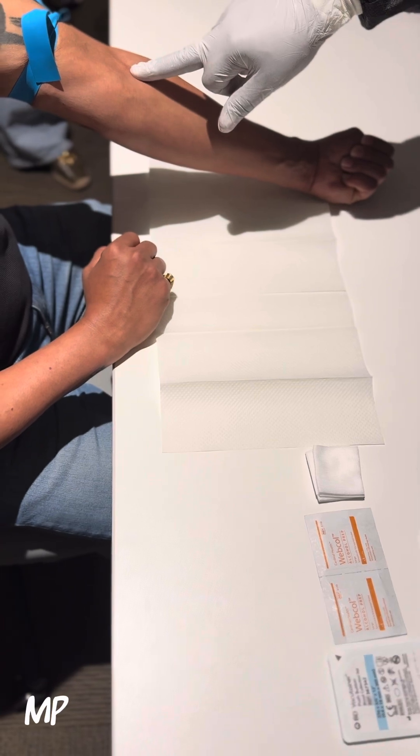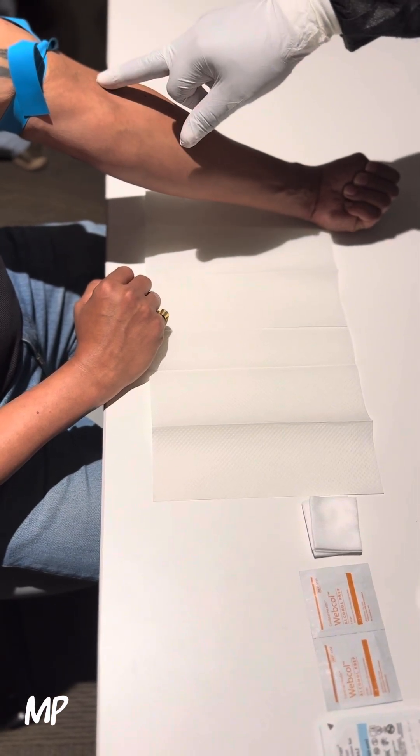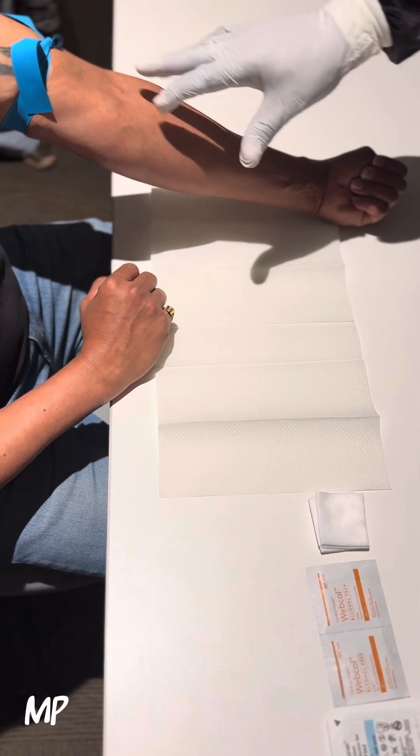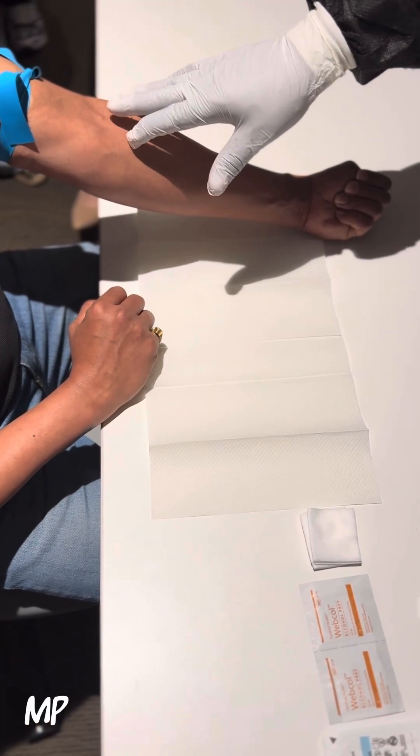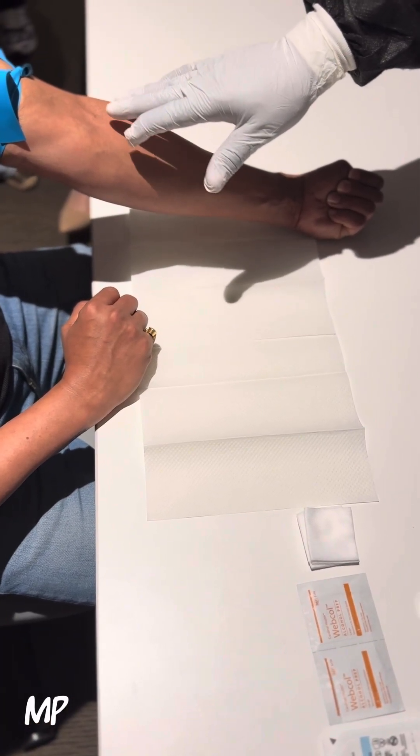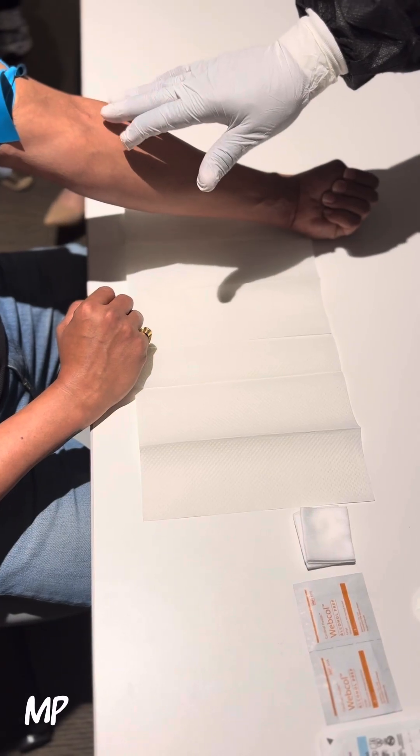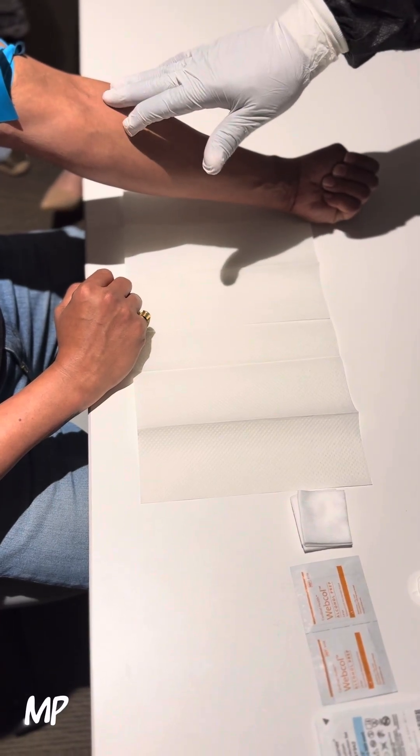We performed a venipuncture there earlier, but we're going to go above the previous venipuncture site. When you're performing a venipuncture on the patient, you can utilize the same vein twice. You just cannot use the same entry point, so you can draw the blood above or below the previous site of incision.